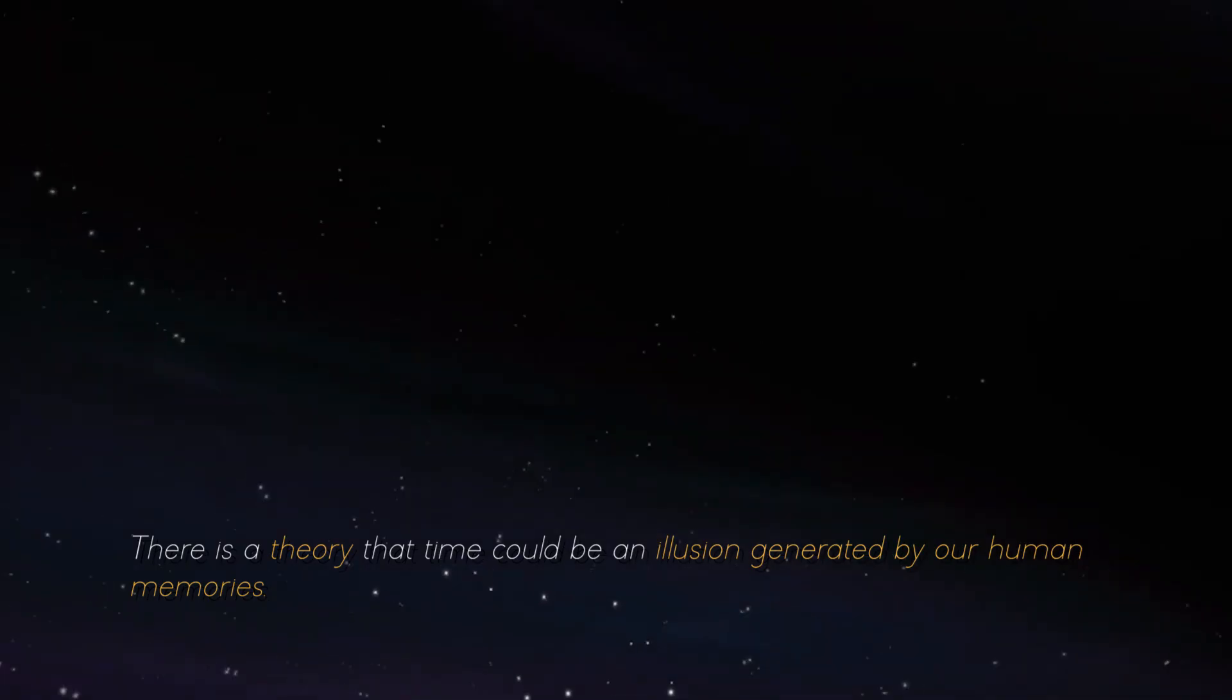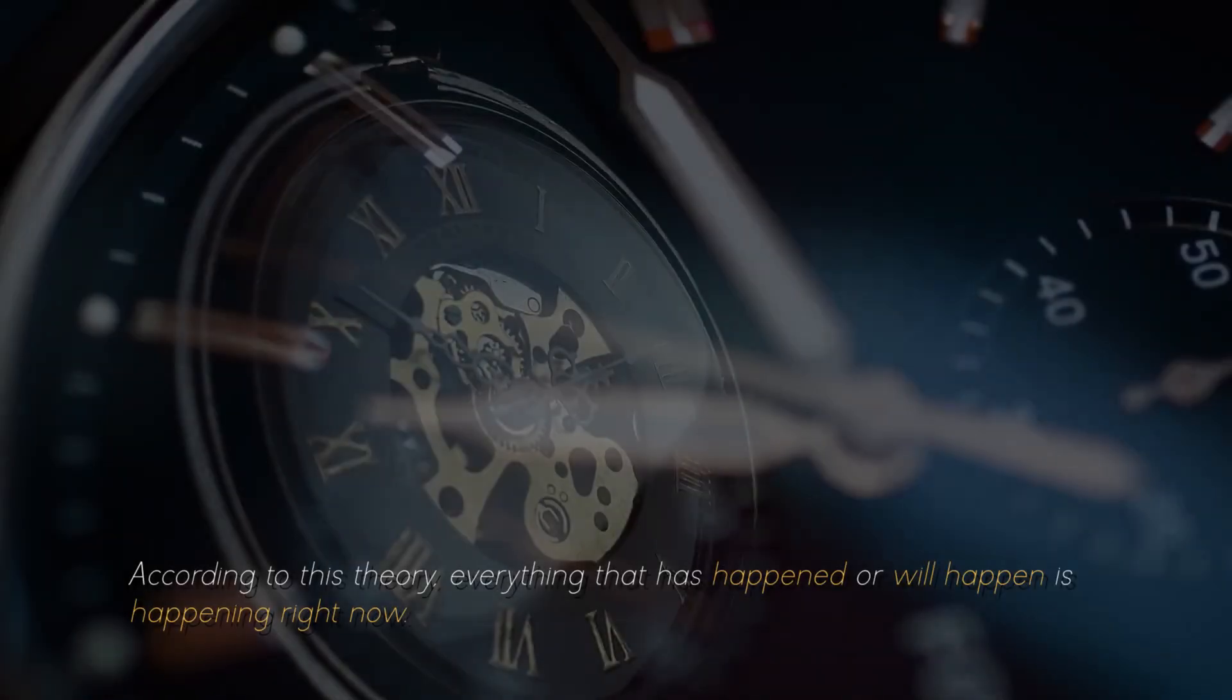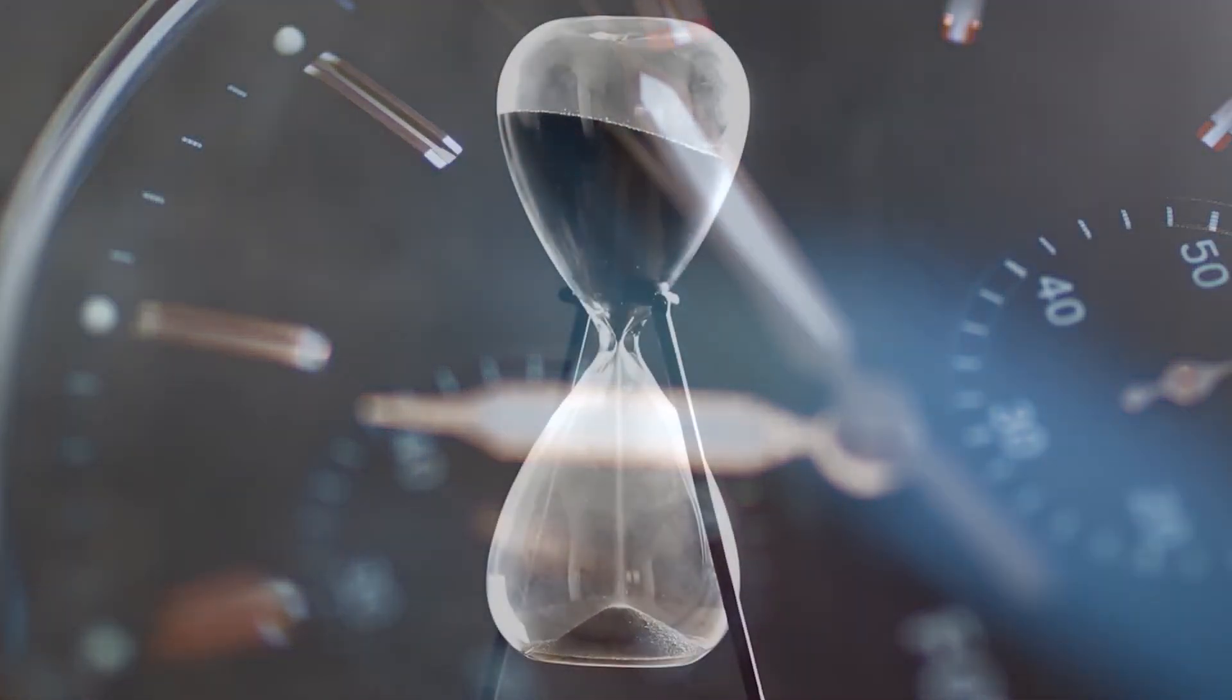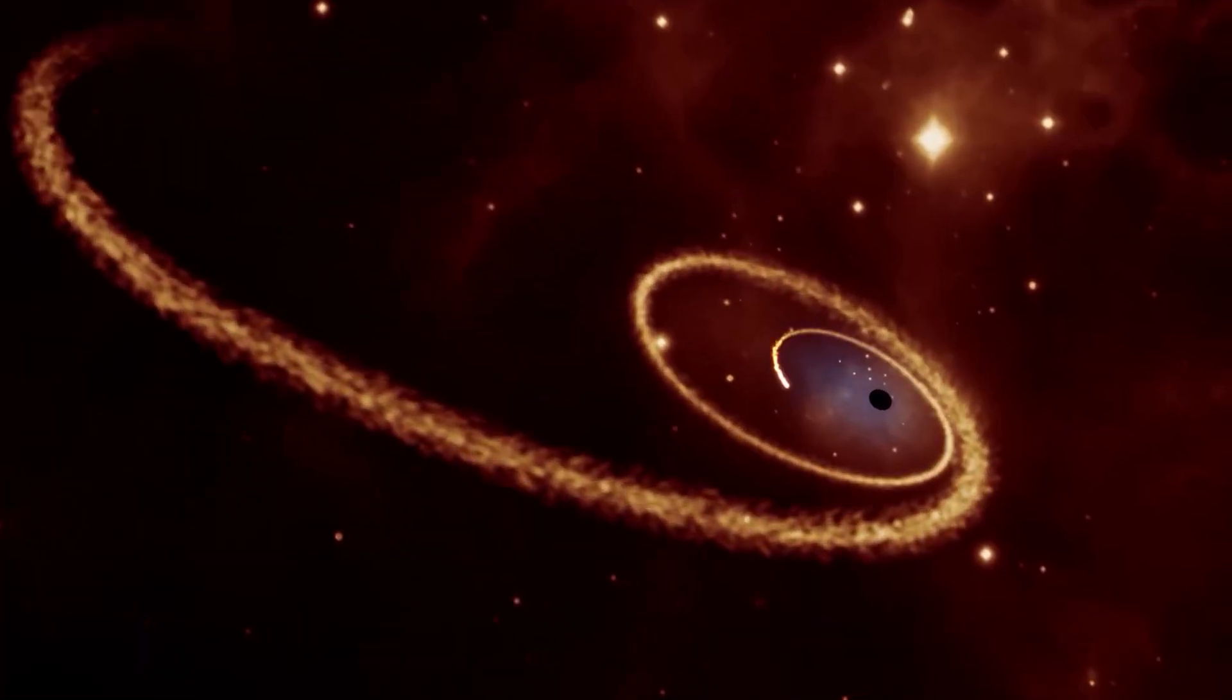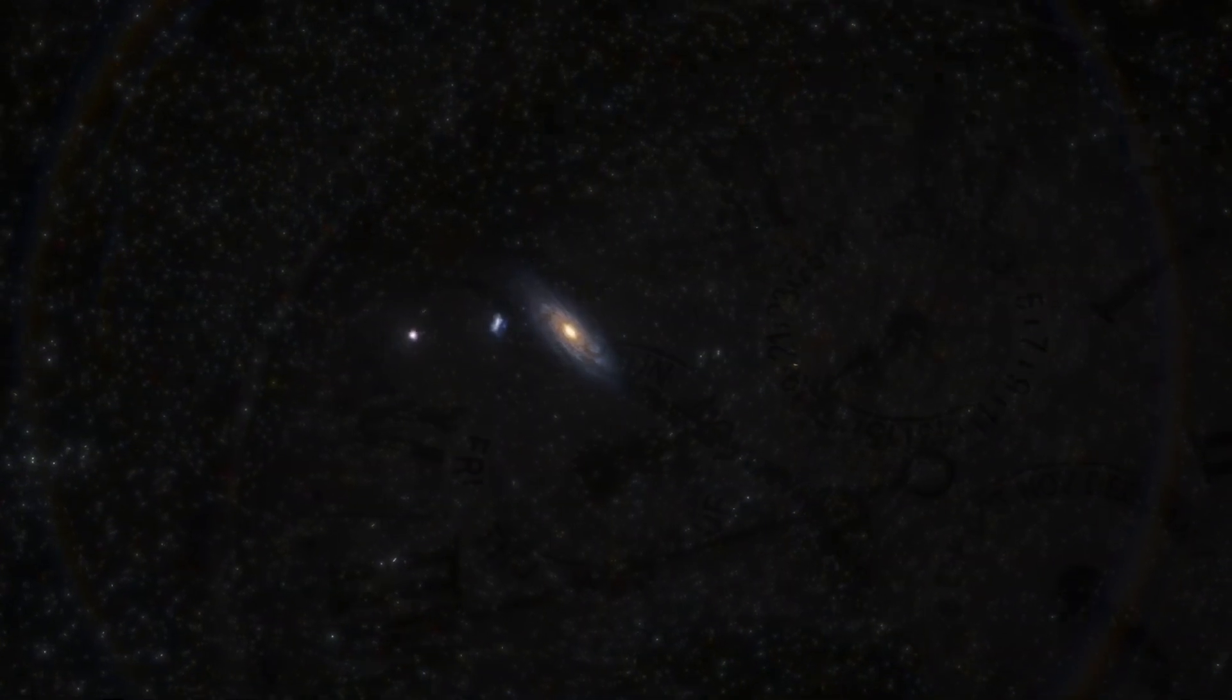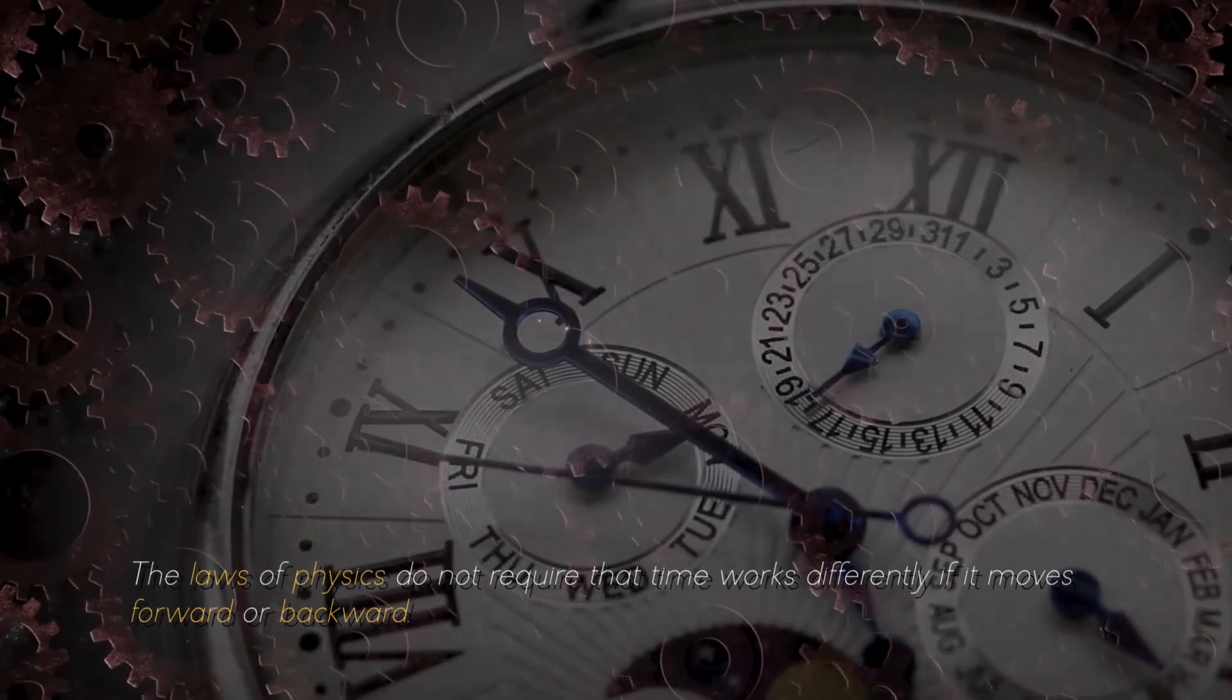There is a theory that time could be an illusion generated by our human memories. According to this theory, everything that has happened or will happen is happening right now. It is a truly amazing concept, isn't it? If we delve deeper into this idea, we tend to think of time as something that flows invariably forward. However, here is the intriguing thing: the laws of physics do not require that time works differently if it moves forward or backward.